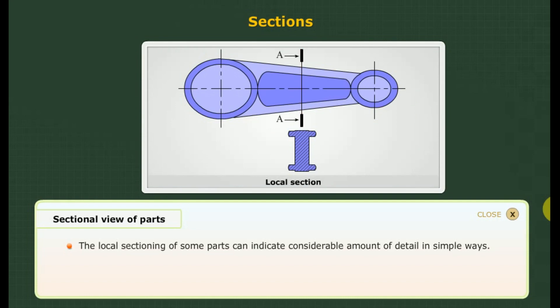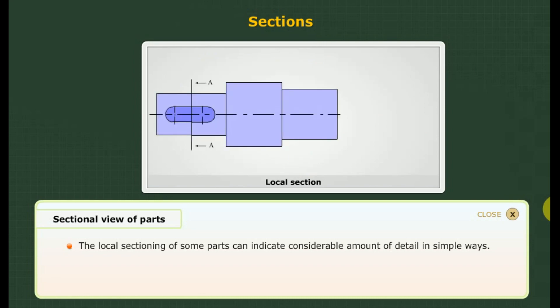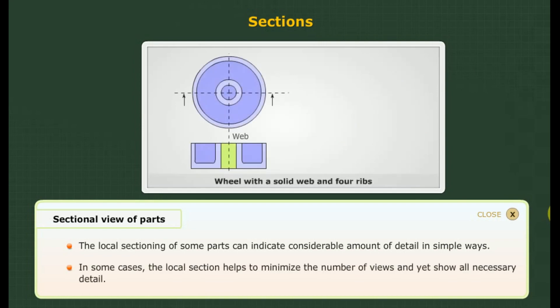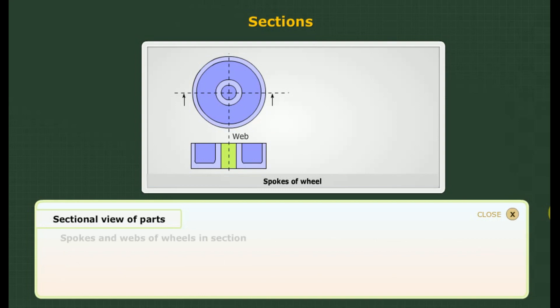The local sectioning of some parts can indicate a considerable amount of detail in simple ways. The example shown here is a connecting rod. In some cases, the local section helps to minimize the number of views and yet show all necessary detail.